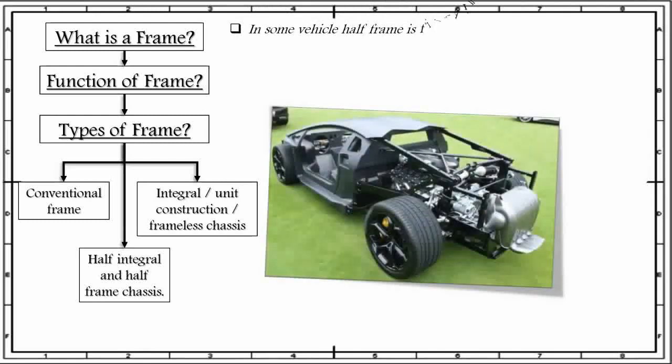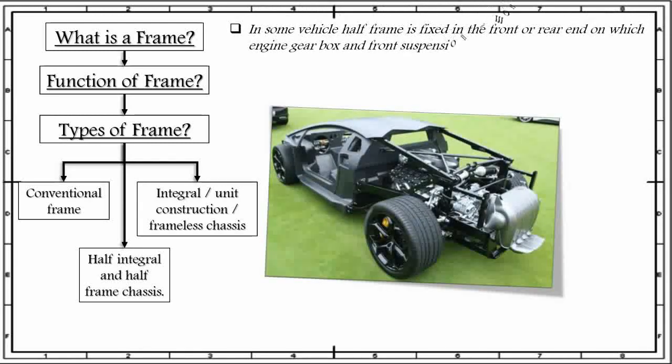The last category into which you can divide the frame is known as half integral and half frame chassis. In some vehicles, a half frame is fixed in the front or rear end on which the engine, gearbox, and front suspension is mounted. As we can see in this figure, the frame part is directly bolted to the structure or to the body of the vehicle.